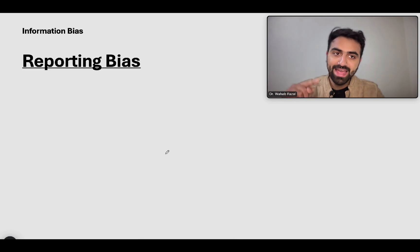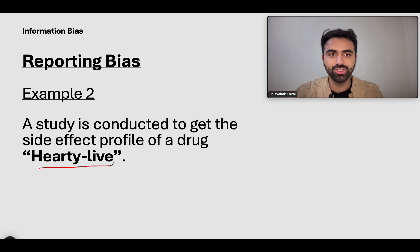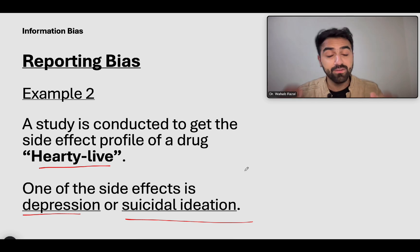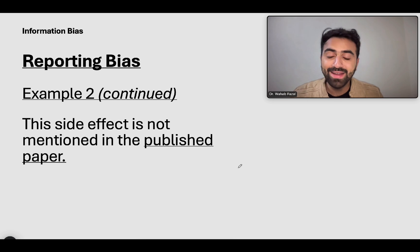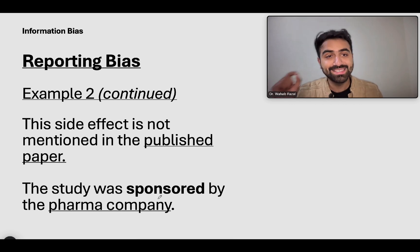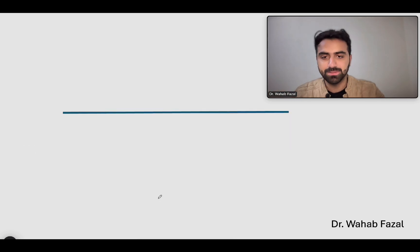Second example: a study is conducted to get the side effect profile of a drug called Hearty Live. One of the side effects is depression or suicidal ideation — a very bad side effect that could warrant a black box warning. This side effect is not mentioned in the published paper because the study was sponsored by the pharma company. That is reporting bias — presenting an incomplete picture to skew the data in your favor.